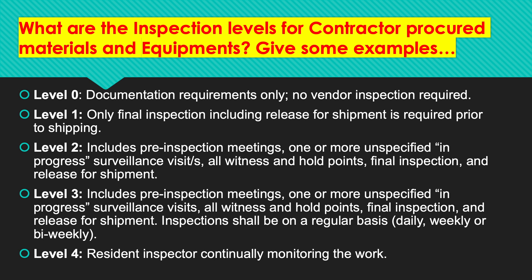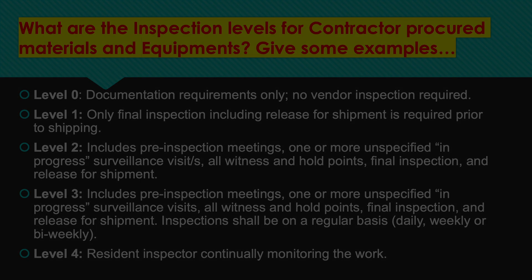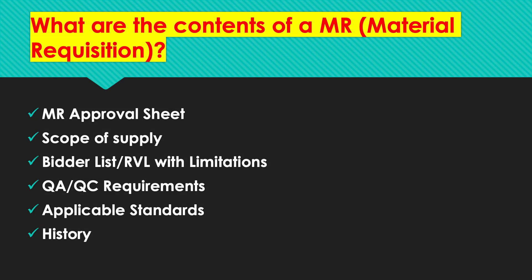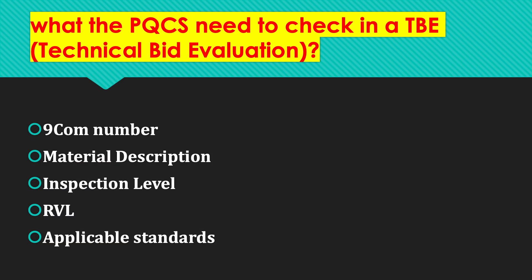Who will prepare the MR? The engineering team will prepare the MR, and it has to be reviewed by the Procurement Quality Control Supervisor (PQCS). What are the contents of a material requisition (MR)? MR approval sheet, scope of supply, bidder list or regulated vendor list with limitations, QA/QC requirements, applicable standards, and history.